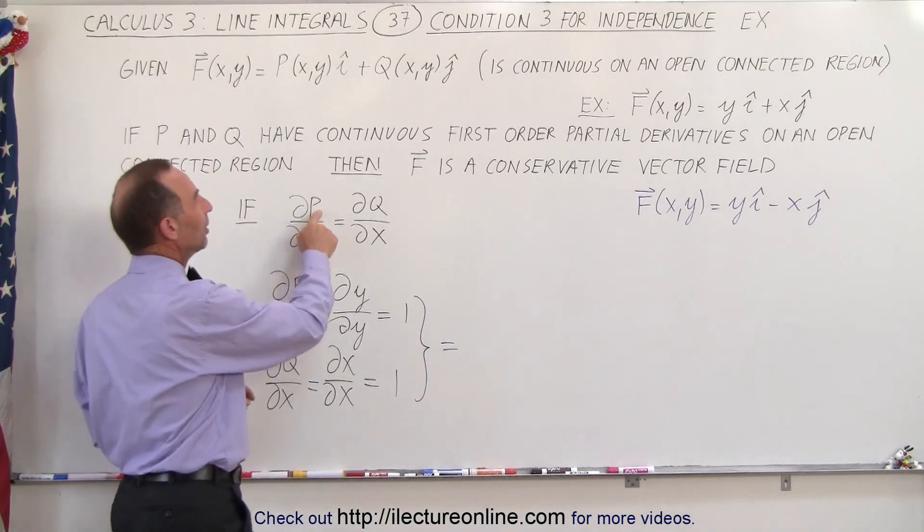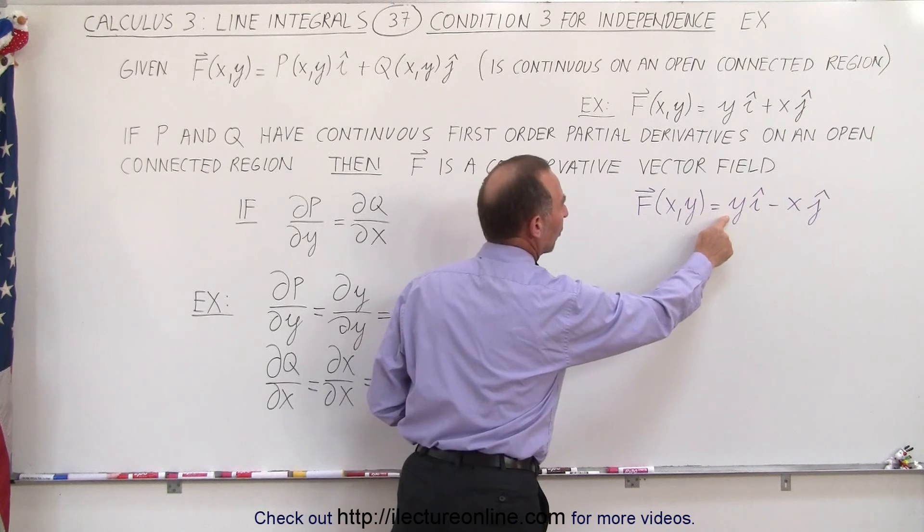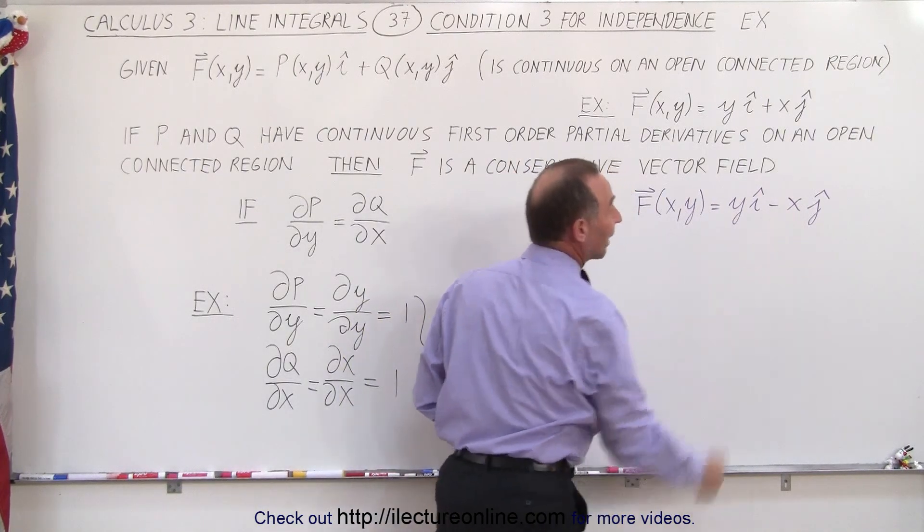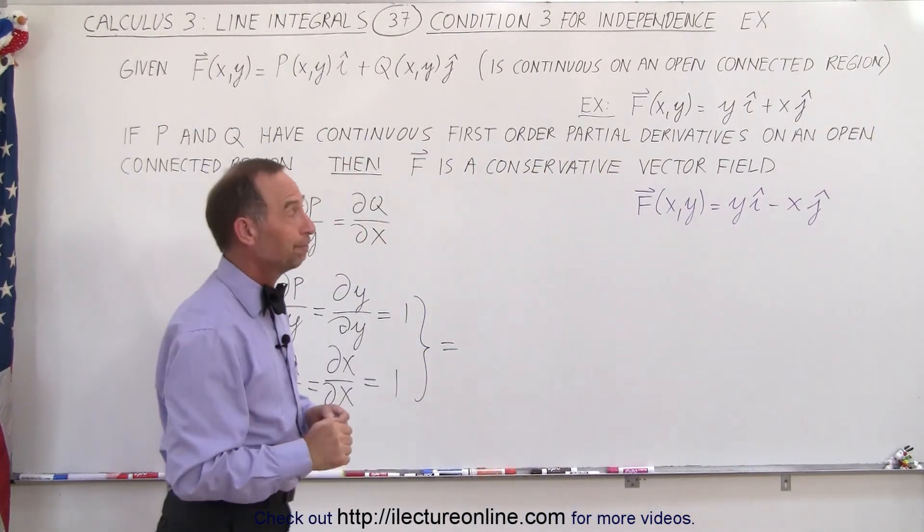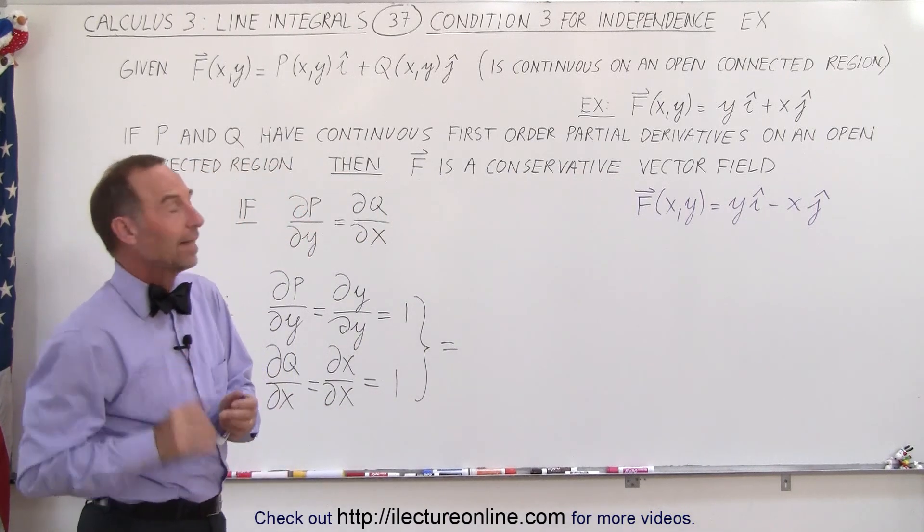We're going to take the partial of P with respect to Y and the partial of Q with respect to X and see if they're equal or not. Our prediction should be that they're not equal.